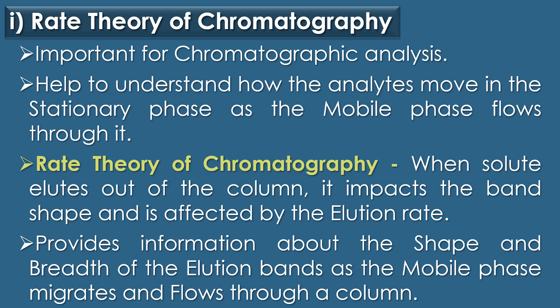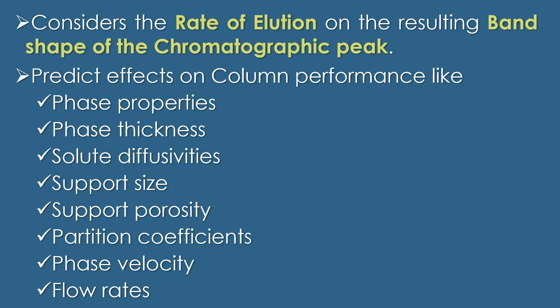The rate theory of chromatography provides information about the shape and breadth of the elution bands as the mobile phase migrates and flows through a column. It helps to understand the process of peak dispersion and factors impacting band broadening. The rate theory gives a realistic explanation of processes occurring in a chromatography column, measuring the time taken by the solute to equilibrate between the stationary and mobile phase, and considers the rate of elution on the resulting band shift or chromatography peak. It can be used to predict effects on column performance like phase properties, phase thickness, solid diffusivities, support size, support porosity, and partition coefficients.